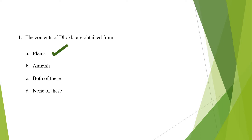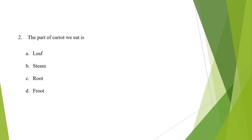Now let's move to the next question. Your second question is: the part of carrot we eat is — A. Leaf, B. Stem, C. Root, D. Fruit. The correct answer is Root.